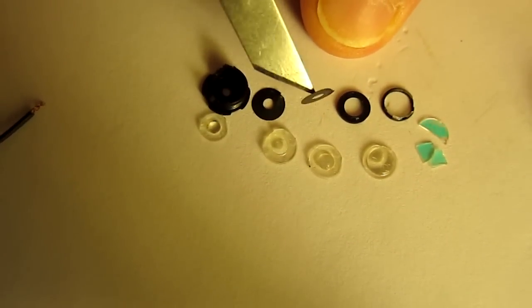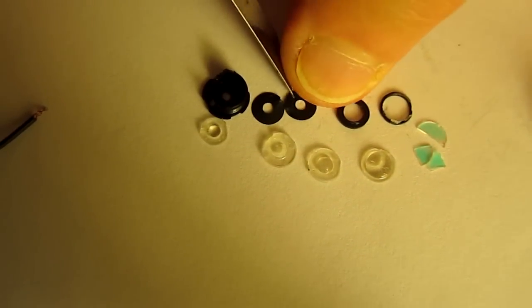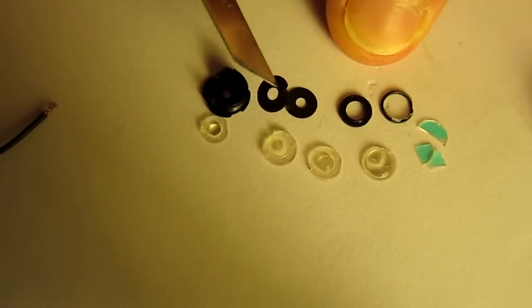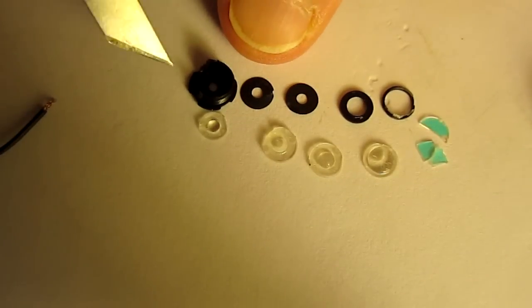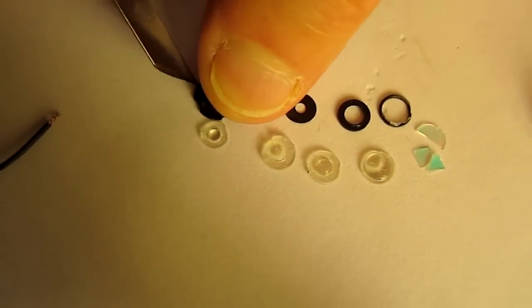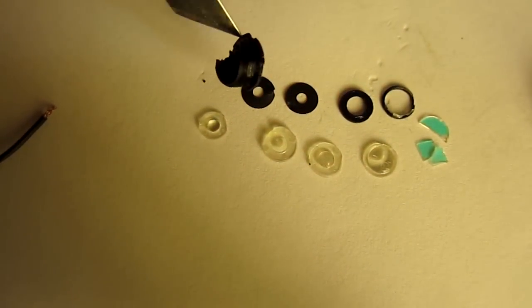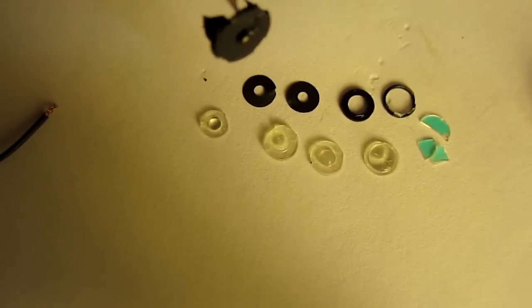So those are all of the parts. All of the 10 parts that make up the lens tube assembly. I'm showing you views of the parts.